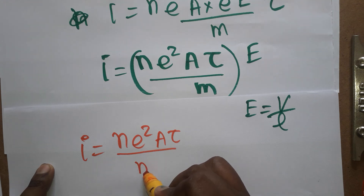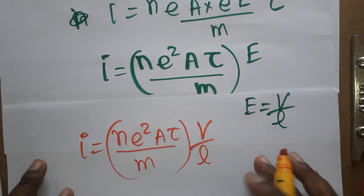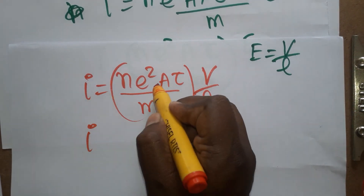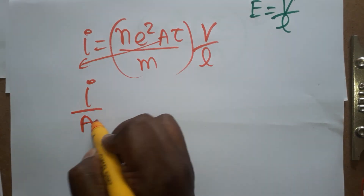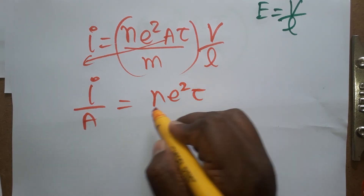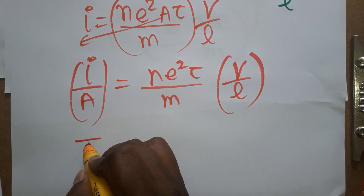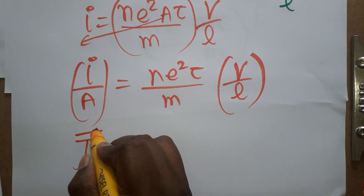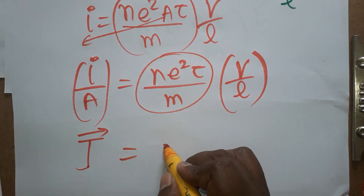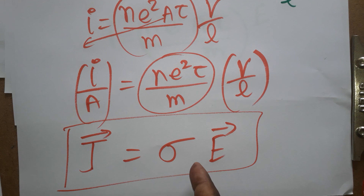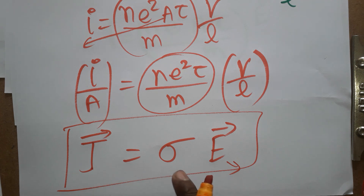Taking E as V/L and dividing both sides by area A: I/A = (ne²τ/m)·(V/L). Current per unit area is current density J, and voltage per unit length is electric field E. So J = σE, where sigma σ = ne²τ/m is the conductivity. This is the vector form of Ohm's law.